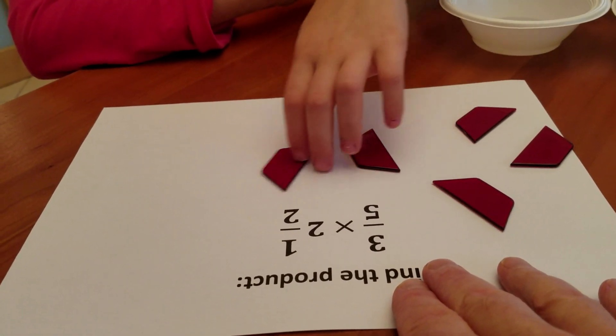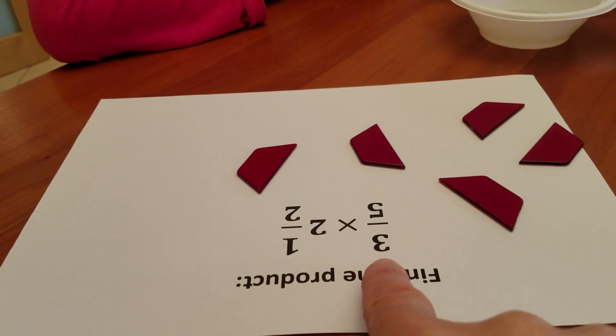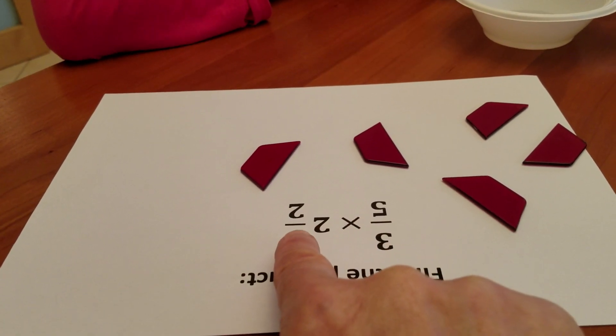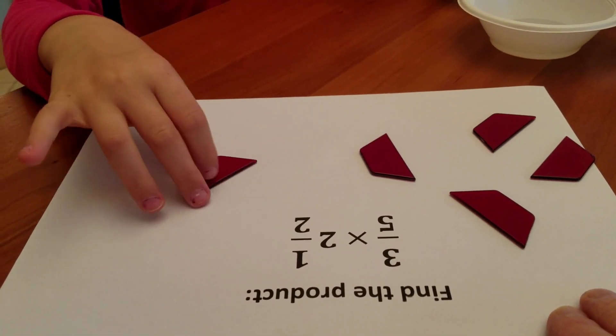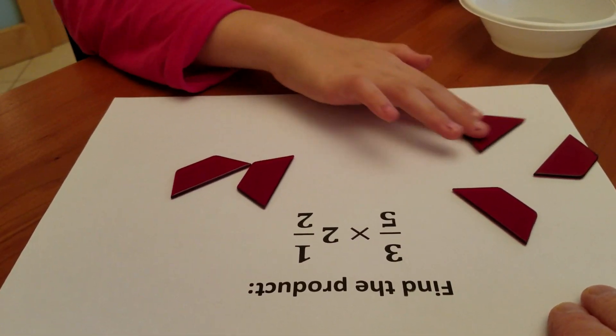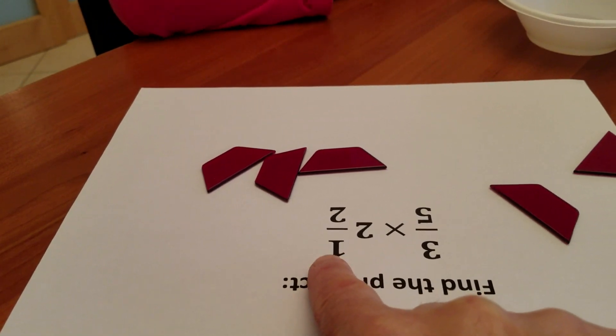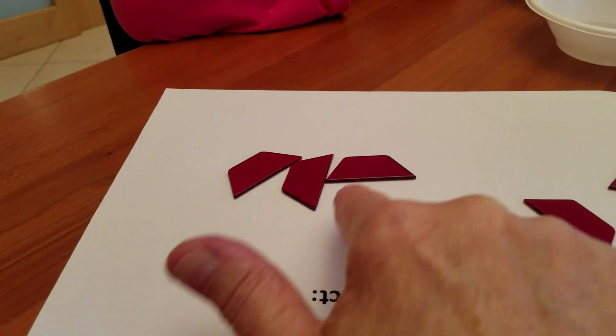Now the problem says to take three-fifths of this. Show me one-fifth. Show me two-fifths. Show me three-fifths. Okay, so three-fifths of two and a half is all of this. How much is all of this?